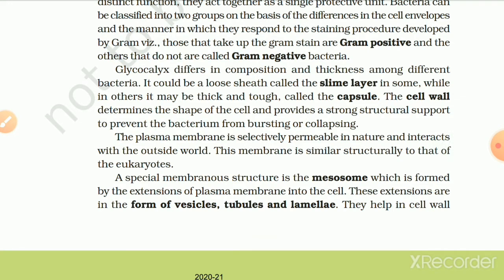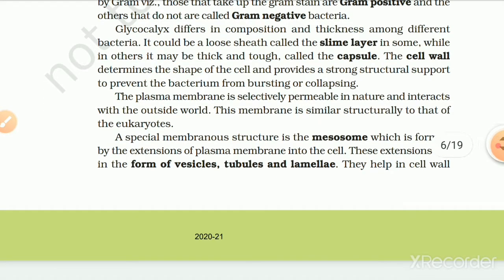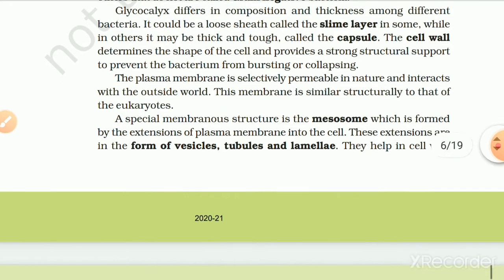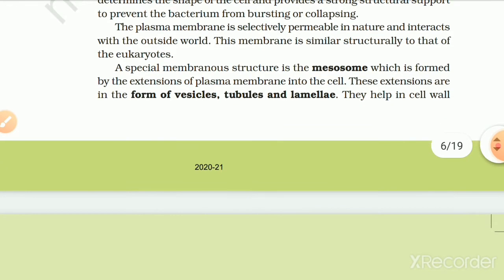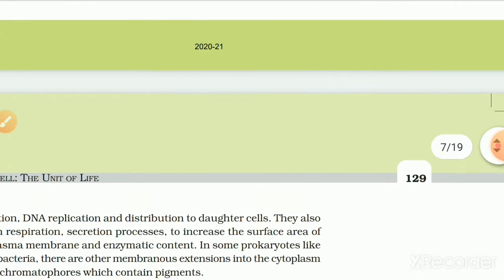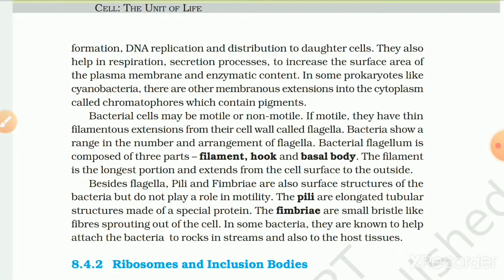The cell wall determines the shape of the cell and provides strong structural support to prevent the bacterium from bursting or collapsing. The plasma membrane is selectively permeable and interacts with the outside world, similar in structure to that of eukaryotes. A special membranous structure, the mesosome, is formed by the inclusion of the plasma membrane in the cell in the form of vesicles, tubules and lamellae. They help in cell wall formation, DNA replication, distribution to daughter cells, respiration, secretion processes, and increase the surface area of the plasma membrane. In some prokaryotes like cyanobacteria, there are membranous extensions called chromatophores, which contain pigments.